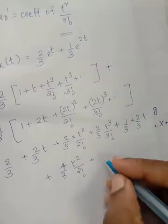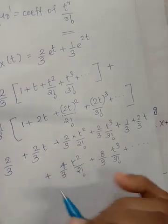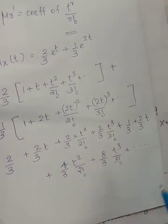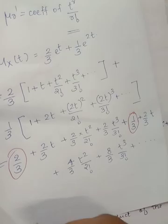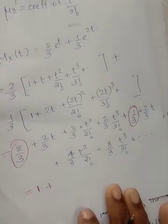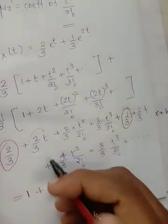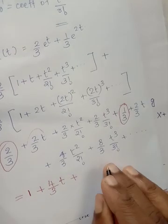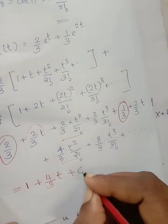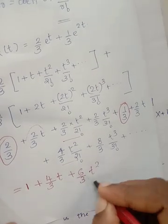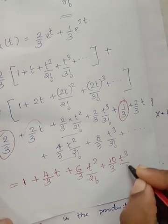Collecting the constant terms: 2 over 3 plus 1 over 3 equals 1. Collecting the t coefficients: 2 over 3 plus 2 over 3 equals 4 over 3. Collecting the t squared coefficients gives 6 over 3 equals 2. Collecting the t cubed coefficients: 2 over 3 times 1 over 6 plus 1 over 3 times 8 over 6 gives 10 over 3 times t cubed over 3 factorial plus etc.